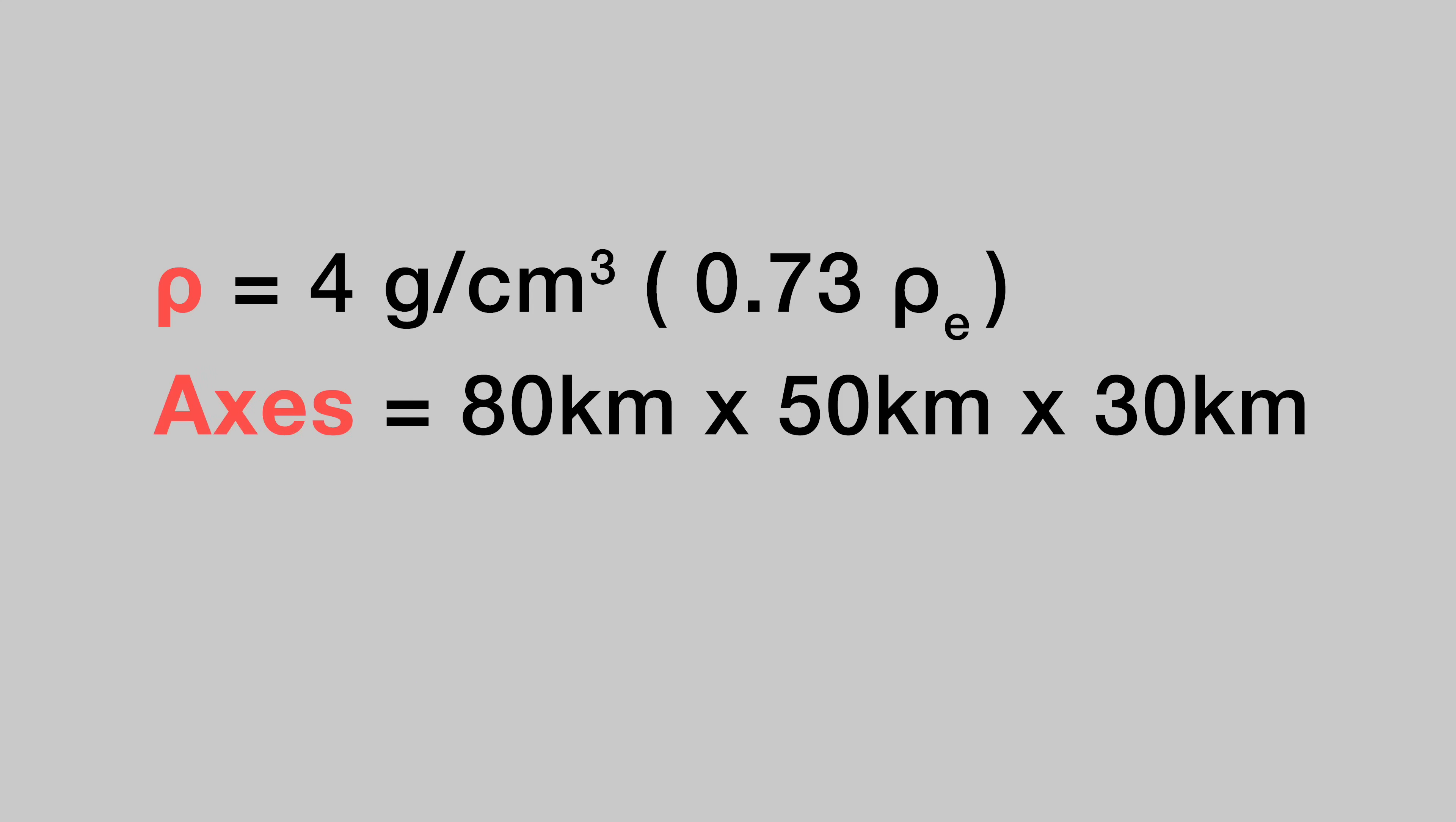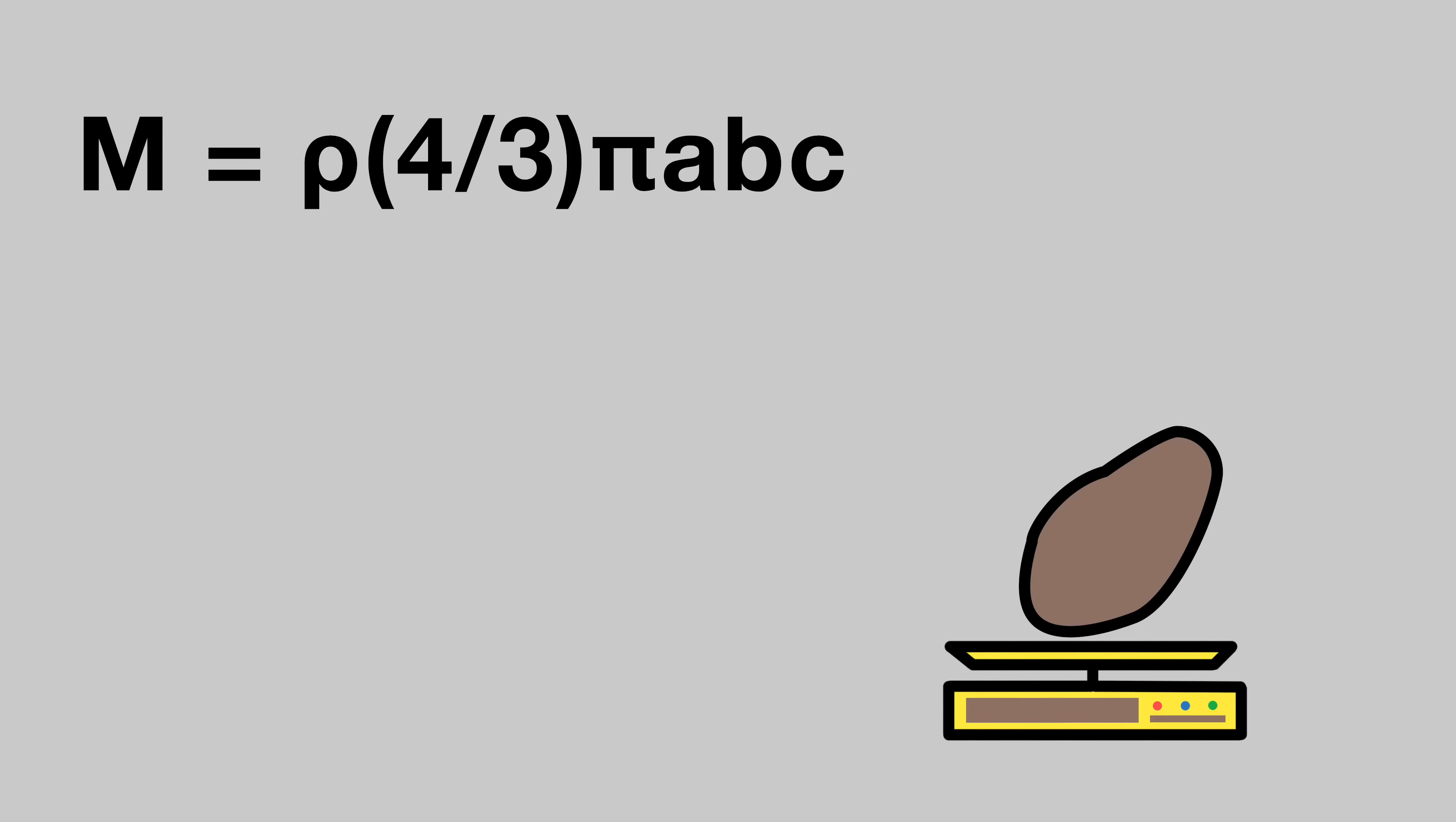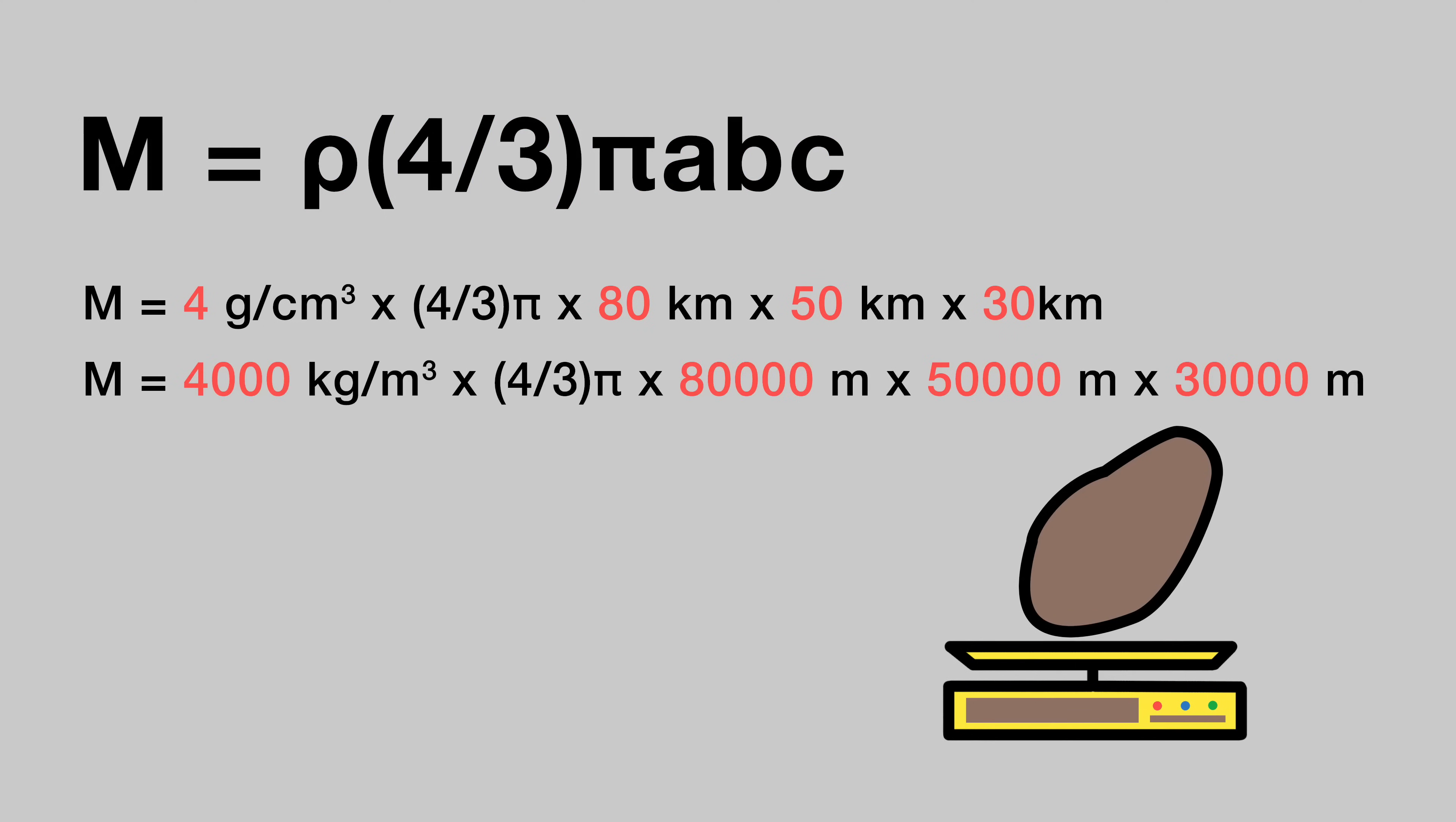With density, size and shape done, let's talk mass. The mass of an ellipsoid is given by rho, the density, times 4/3 pi, times the three axes A, B and C. To make sure the units work out, we have to multiply each of our inputs by a thousand. In this case, my moon ends up with a mass of about 2 times 10 to the power of 18 kilograms.